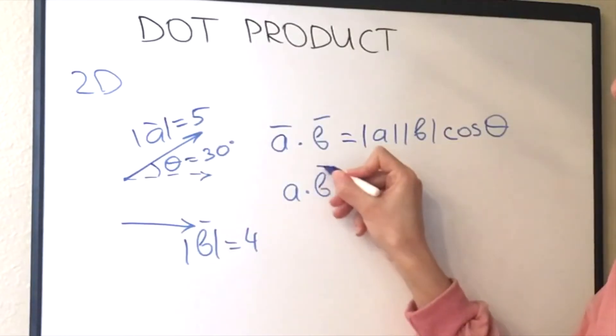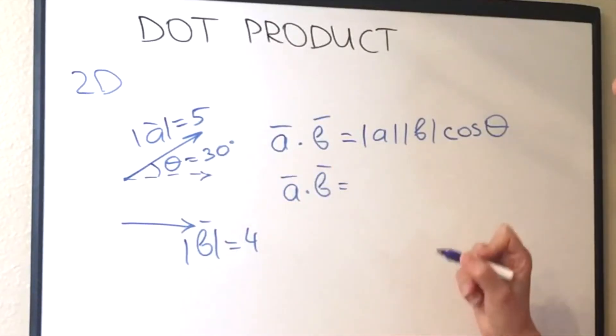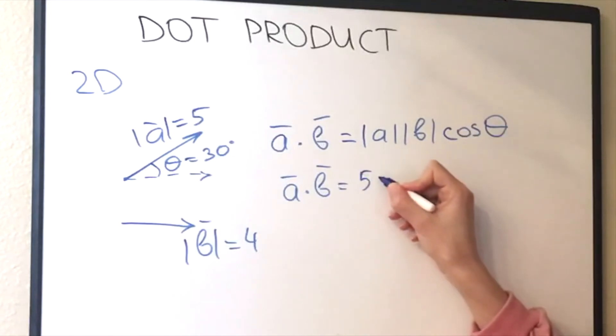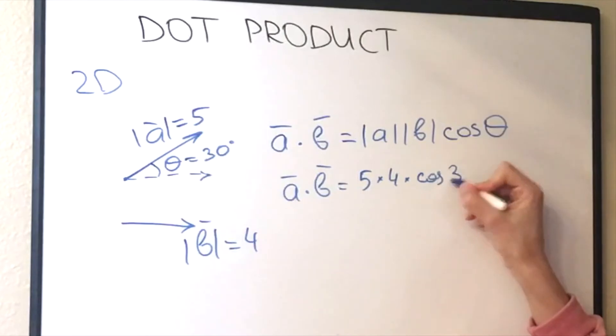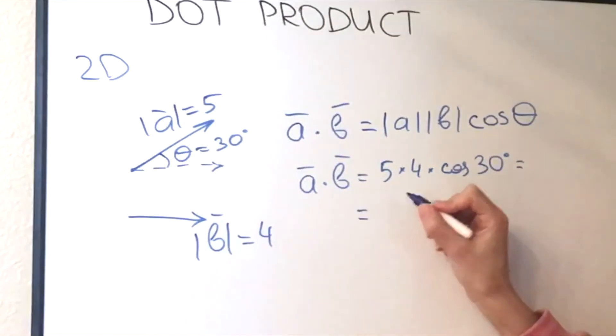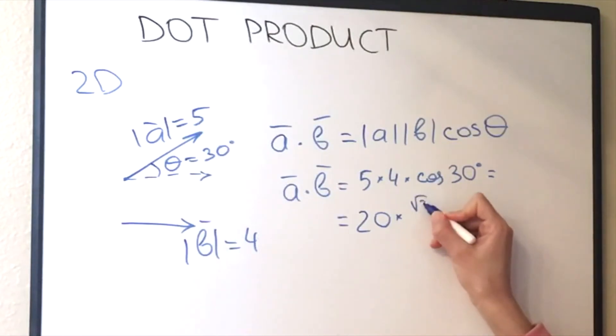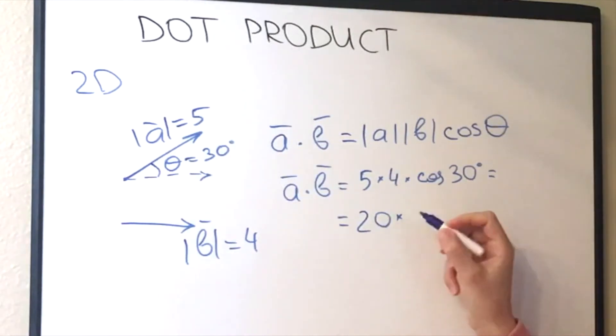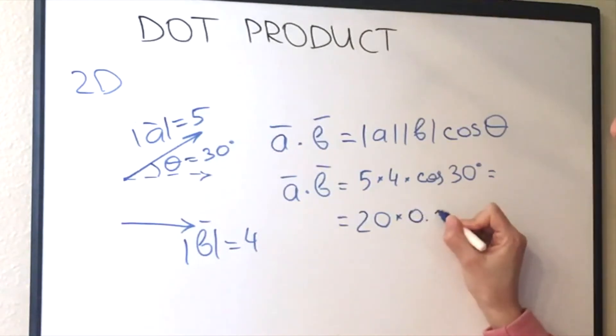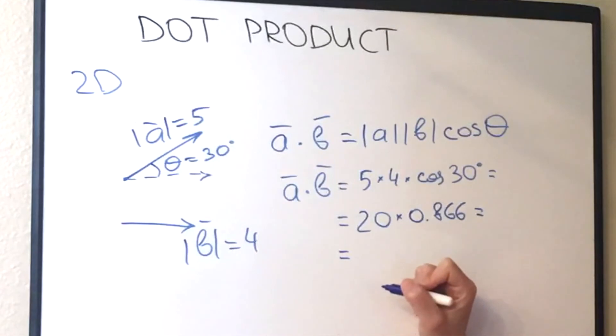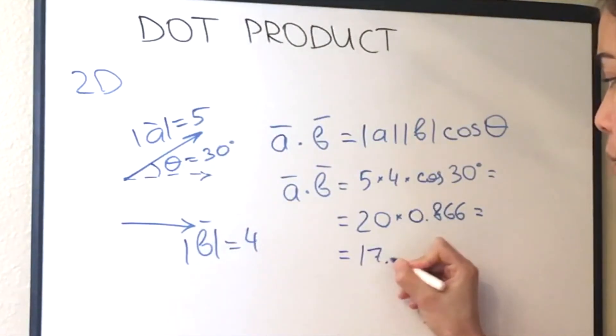Then the dot product will give us 5 multiplied by 4 multiplied by cosine of 30 degrees, which will be 20 multiplied by square root of 3 over 2, which will be 20 multiplied by 0.866, which is equal to 17.3.